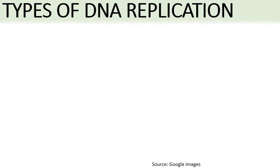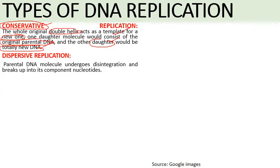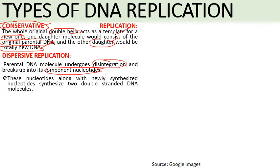The first type of replication is conservative replication. In this type, the whole original double helix acts as a template, one daughter molecule consists of the original parental DNA conserved as-is, and the other daughter molecule is entirely new DNA. The second type is dispersive replication, where the parental DNA molecule disintegrates and breaks into component nucleotides, which along with newly synthesized nucleotides form two double-stranded DNA molecules consisting of mixed parental and new fragments.